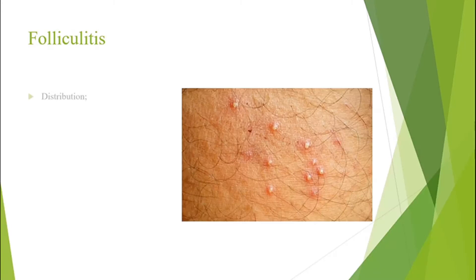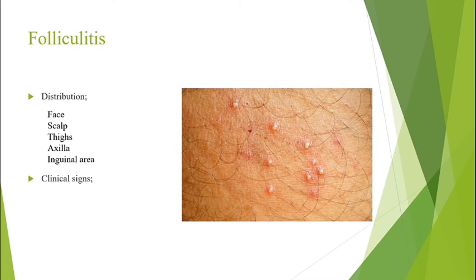The distribution of folliculitis includes the face, scalp, thighs, axilla, and inguinal area. Clinical signs include the five signs of inflammation: rubor (redness), calor (heat), tumor (swelling), dolor (pain), and loss of function.